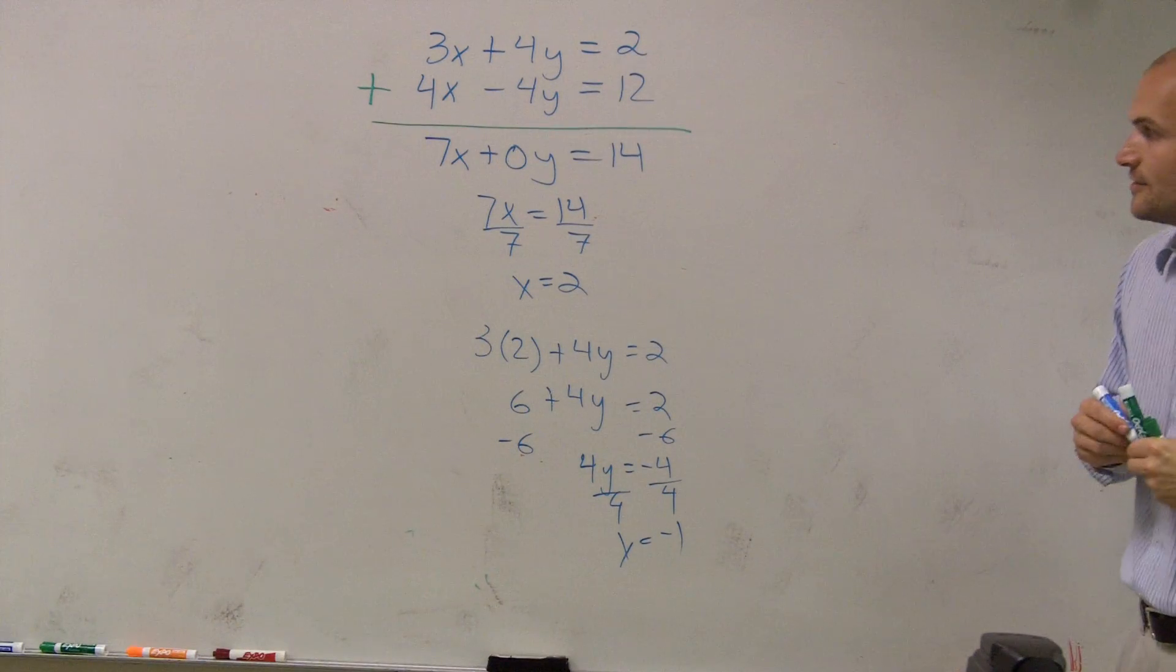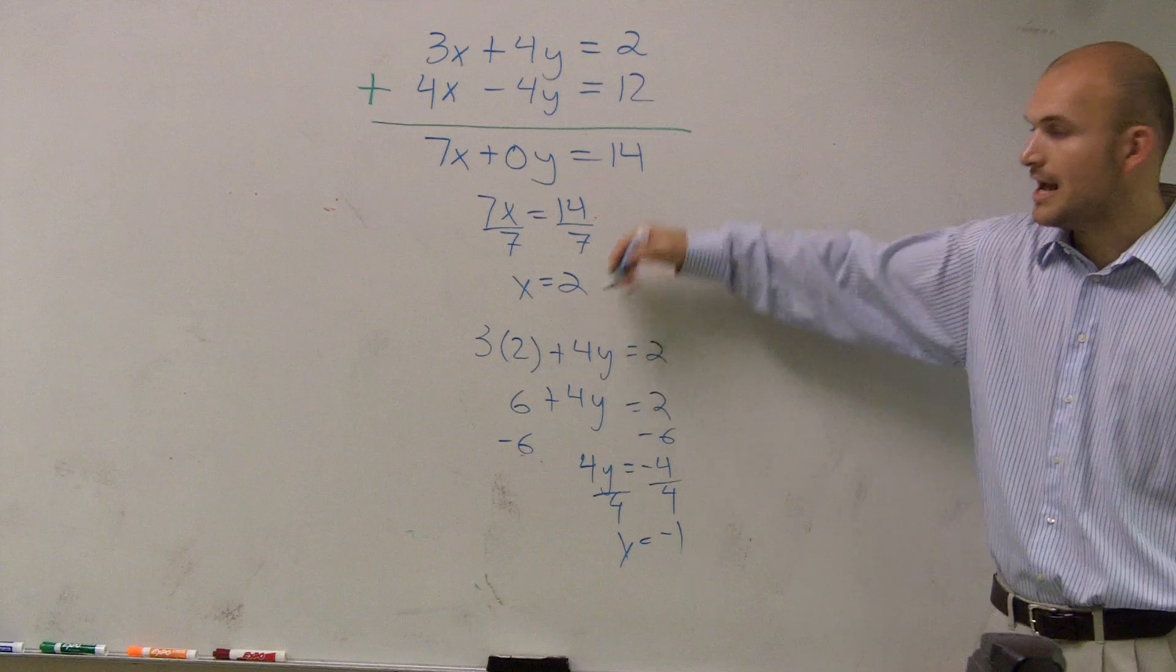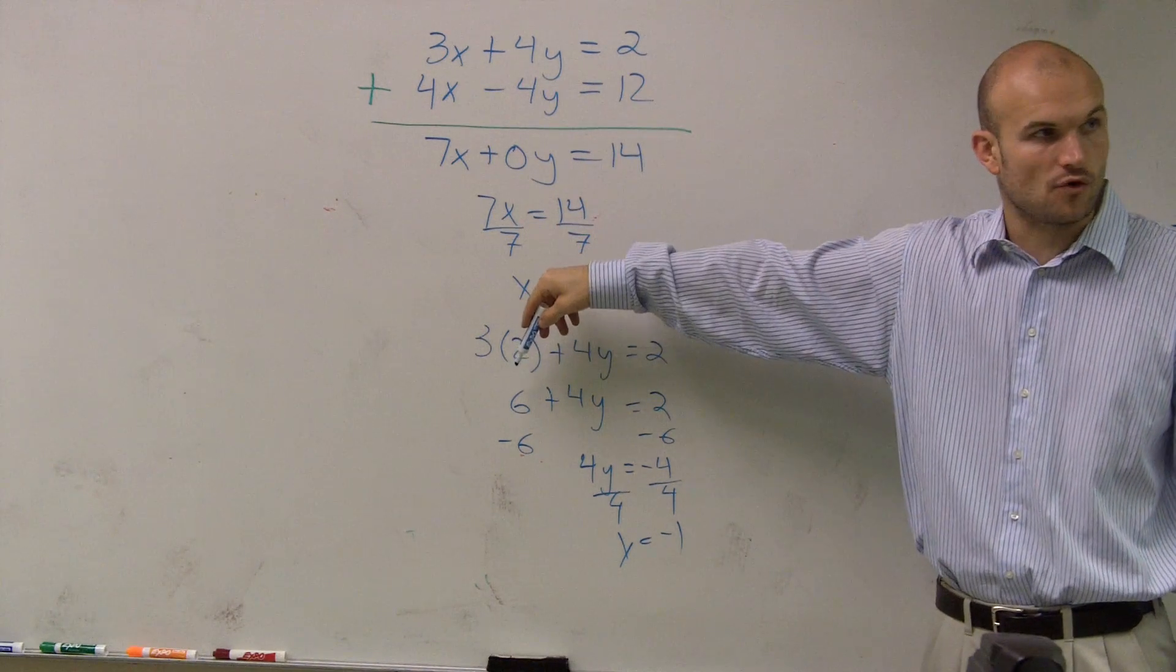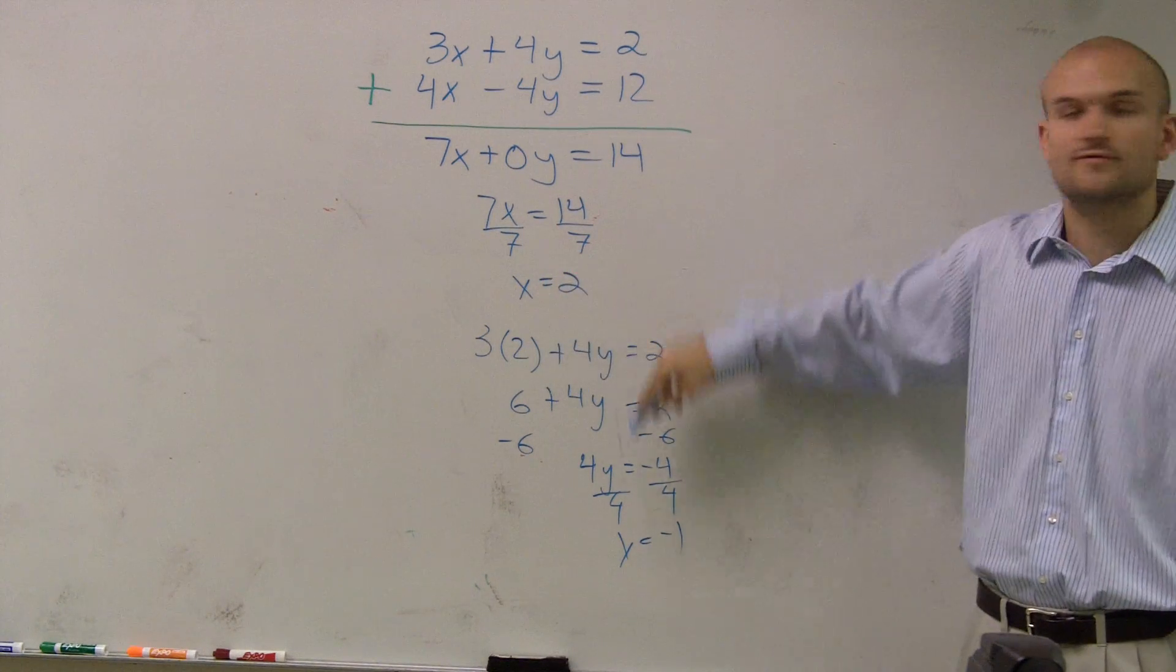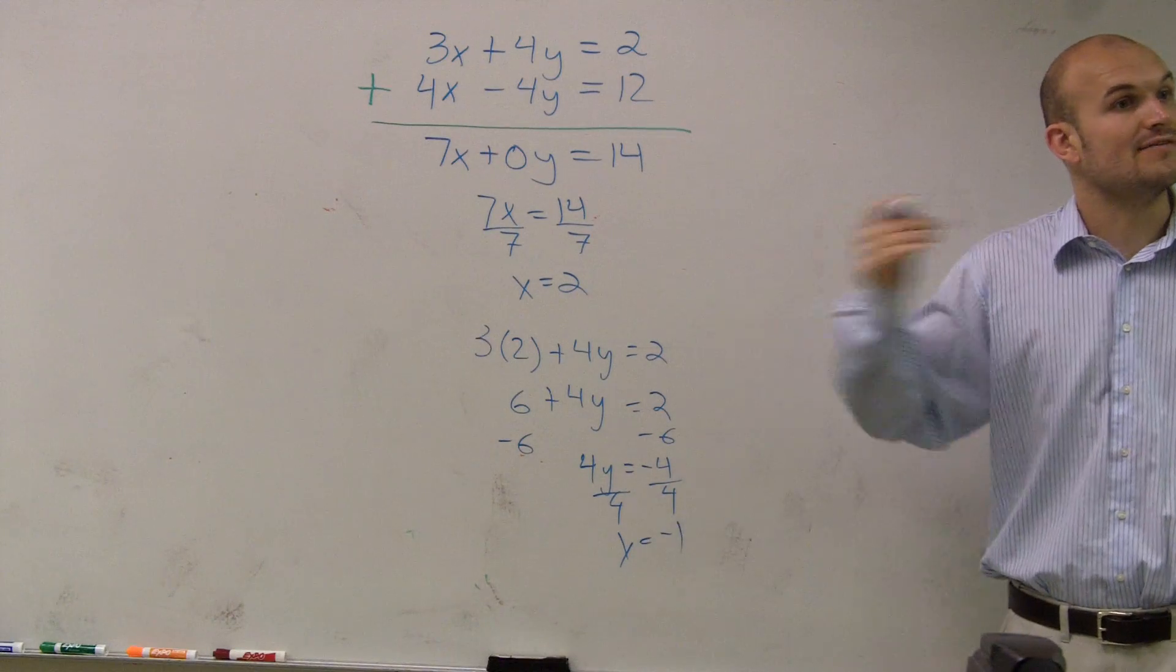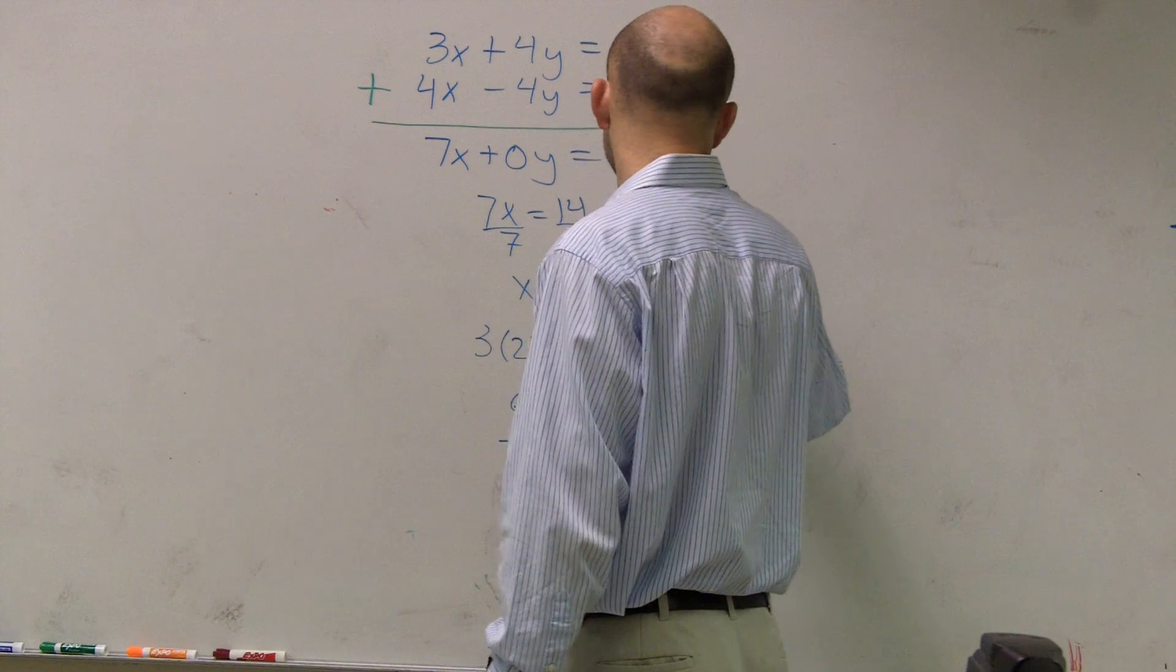So therefore, now I've figured out the value of x, which is 2. And then I plug that value back into one of the equations. And I solve for the value of y. So now I have an x and a y value, which I can write as a coordinate point.